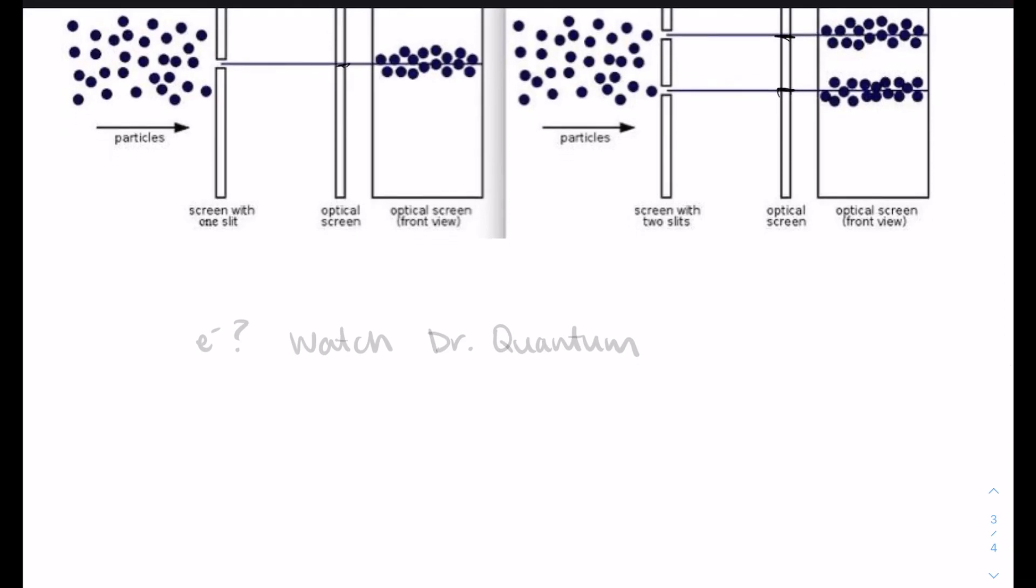Now the question is, what happens with electrons? Do electrons behave like waves? Do they behave like particles? Does anything change that? And I'm going to send you to another video for this, because it's already been done so well. There's a Dr. Quantum video linked on Canvas. You should watch the Dr. Quantum video to see exactly what happens when we take electrons and we put them through the single and double slit experiment.